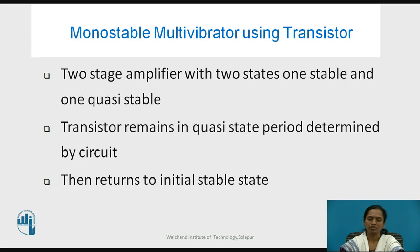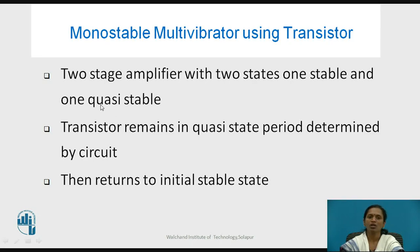What is a monostable multivibrator? It is a two-stage amplifier with two stable states, out of which one is a stable state — that is logic 0 — and another is a temporary state, nothing but logic 1, which is your quasi-stable state. So one is a stable state and another is a quasi-stable state.